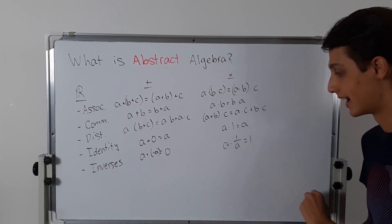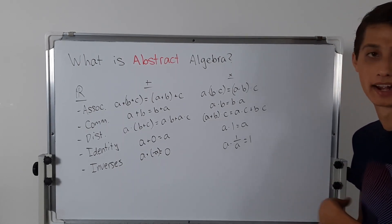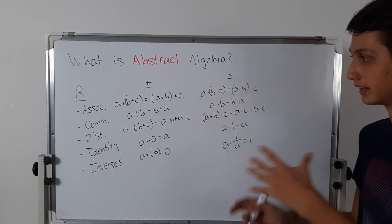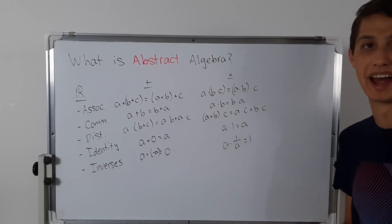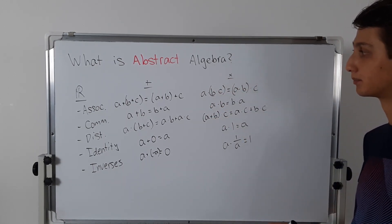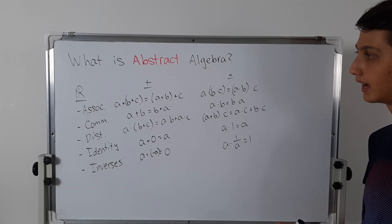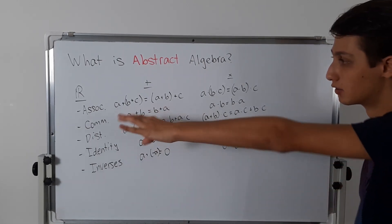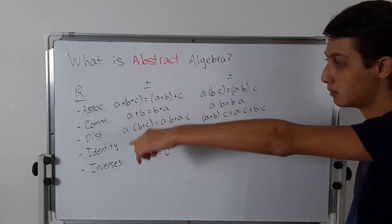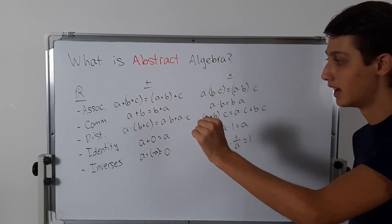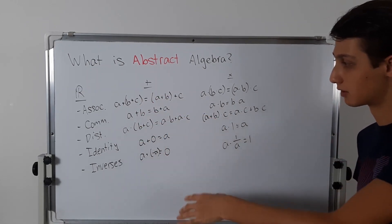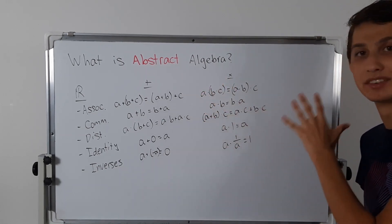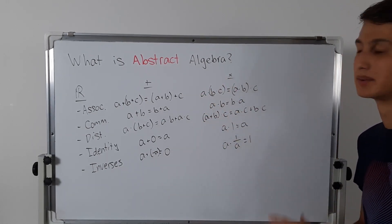When we multiply a by its inverse we get back the multiplicative identity. So for the real numbers we have this long list of properties: associativity, commutativity, distributivity, identity elements, and inverses that exist for both operations — that's like ten different rules.